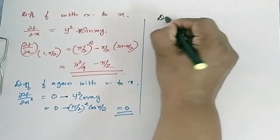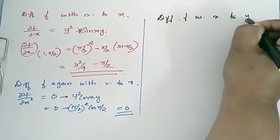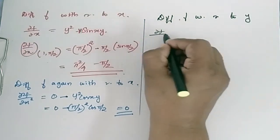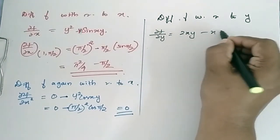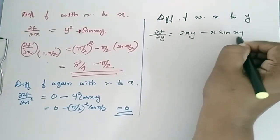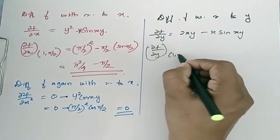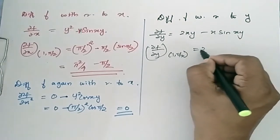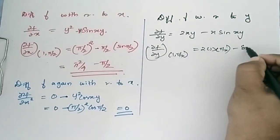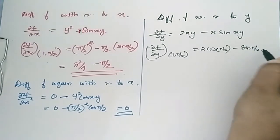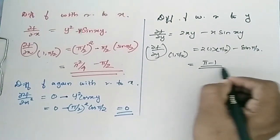Now differentiate f with respect to y. ∂f/∂y = 2xy − x·sin(xy). ∂f/∂y at (1, π/2) = 2·1·(π/2) − sin(π/2), which is equal to π − 1.